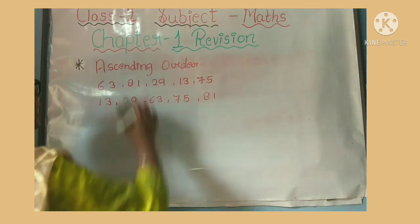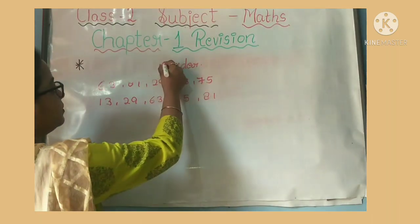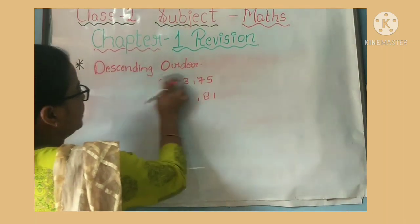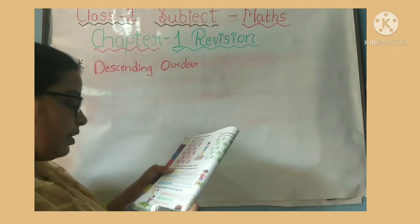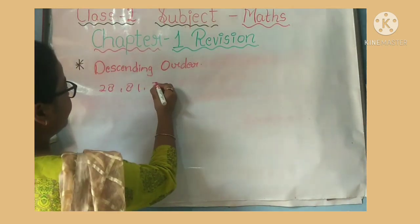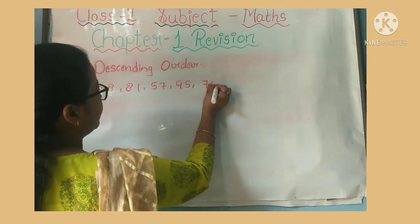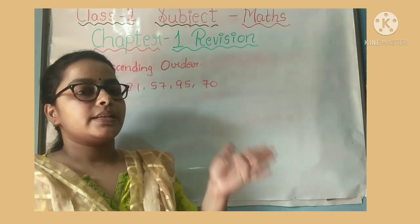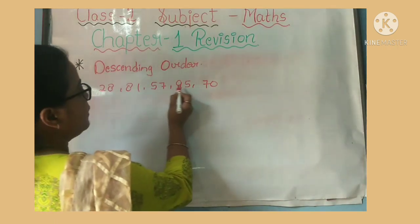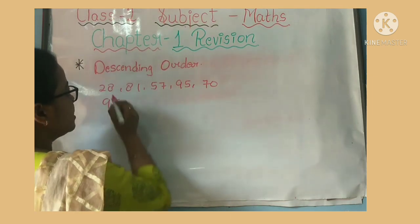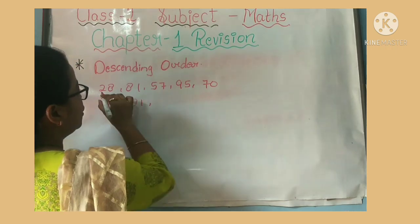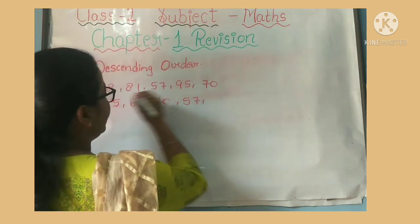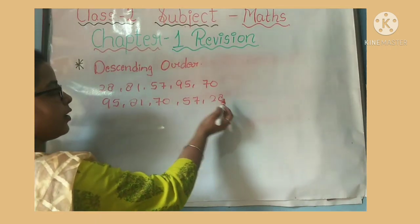Now we will explain descending order. Descending order: for example, 28, 81, 57, 95, 70. We compare and arrange from largest to smallest. So sabse bada number kya hai — 95 — and sabse chota number kya hai — 28.